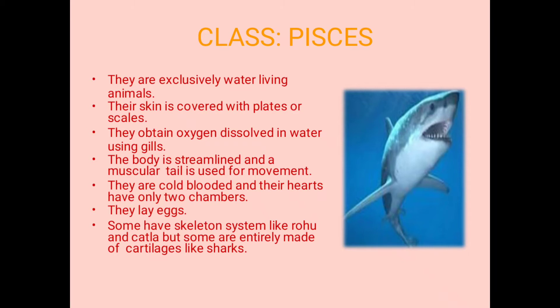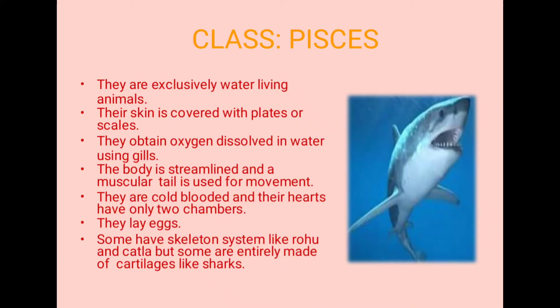The body is streamlined. If you look at the structure of a fish, the body shape is streamlined — we call this a streamline shape. A muscular tail is used for movement. This is why boats are also made streamlined, so that they can float on water and move without sinking.